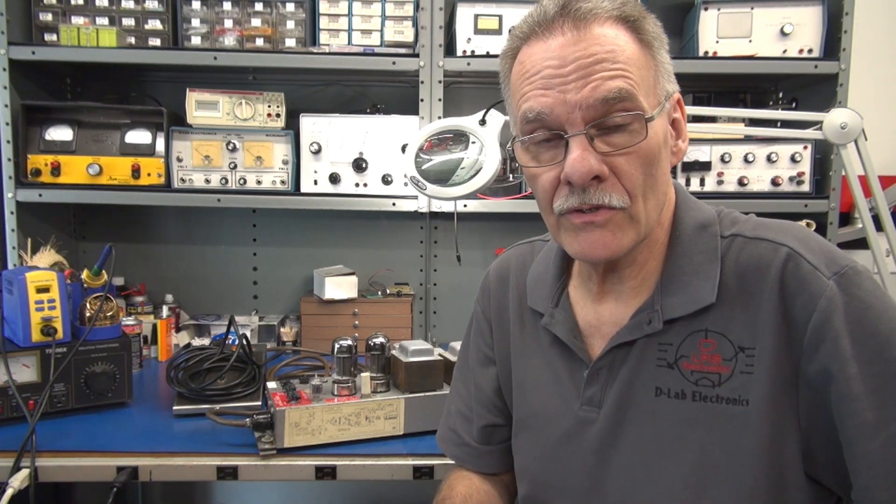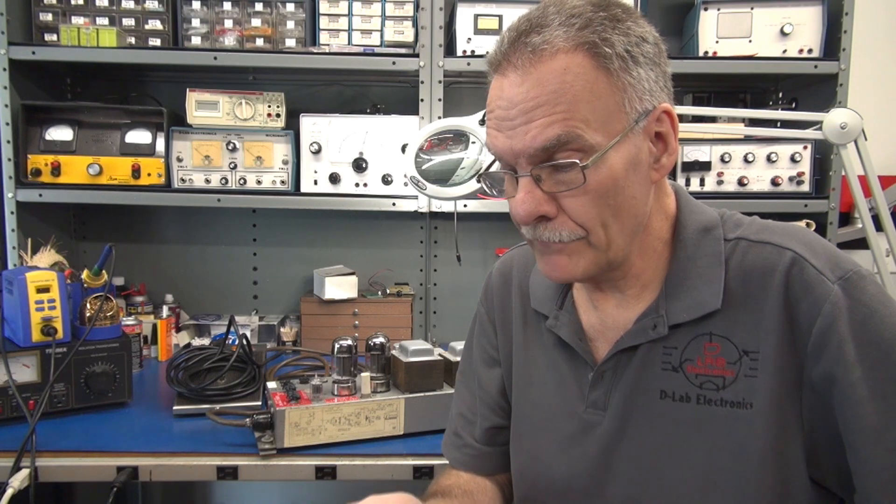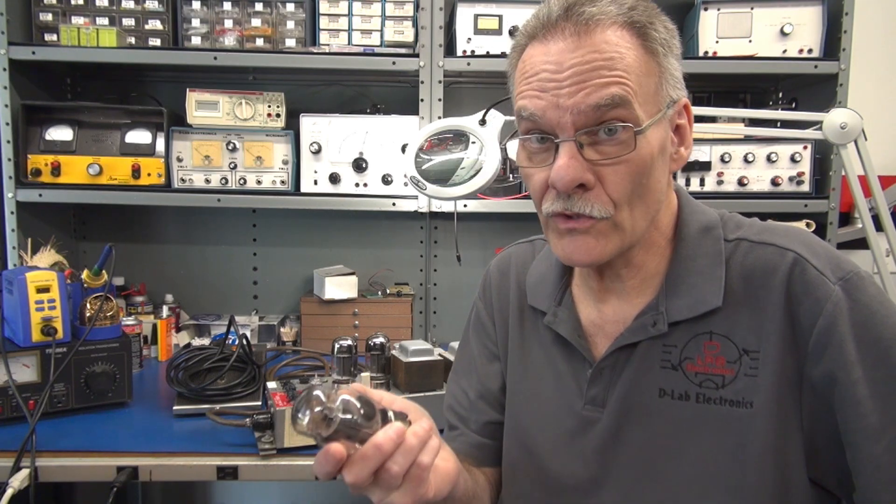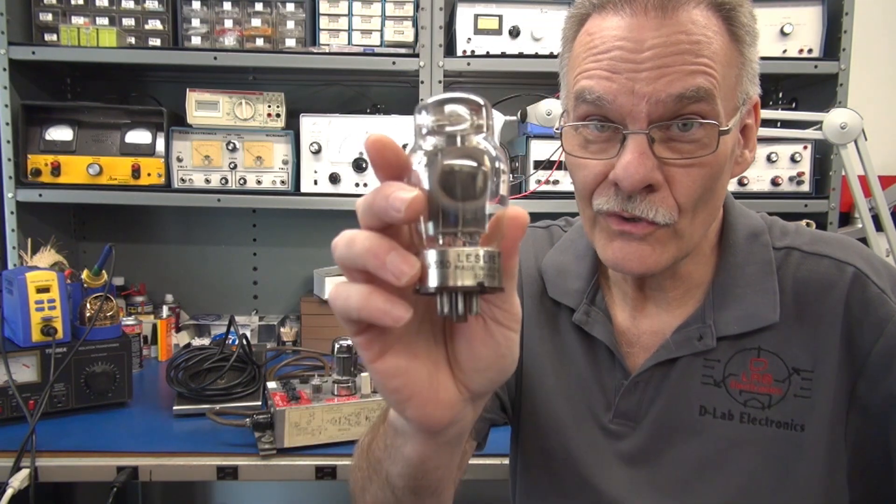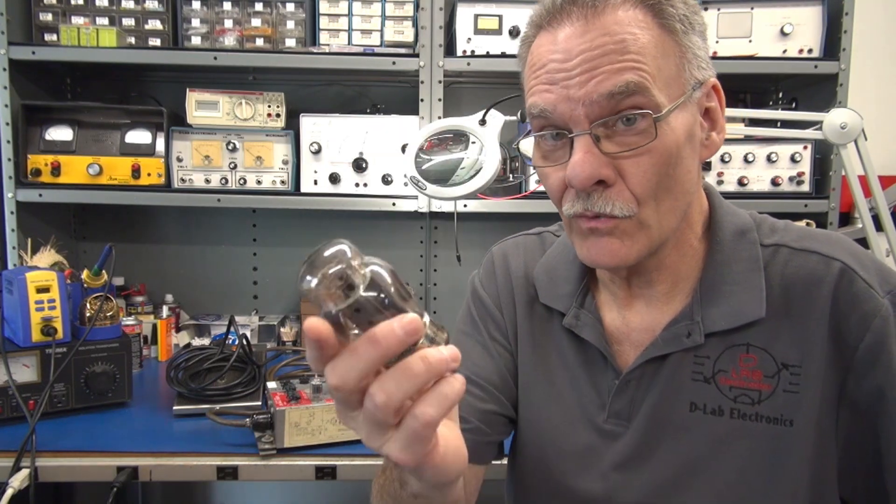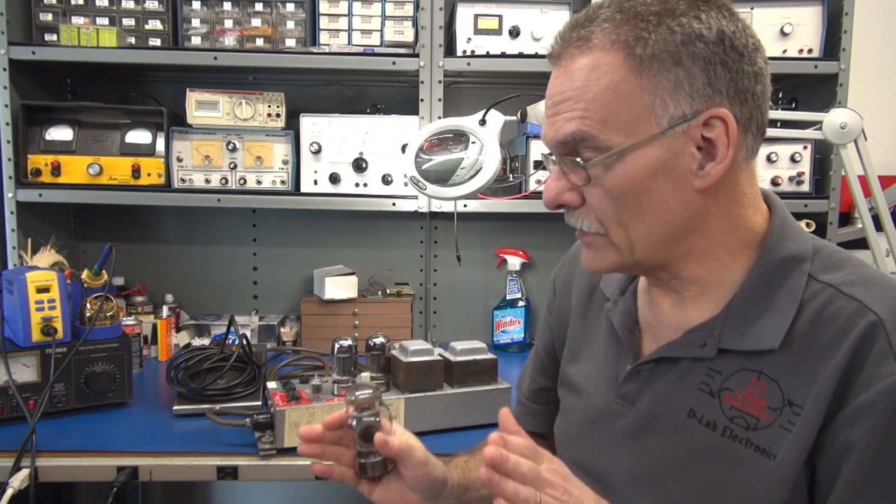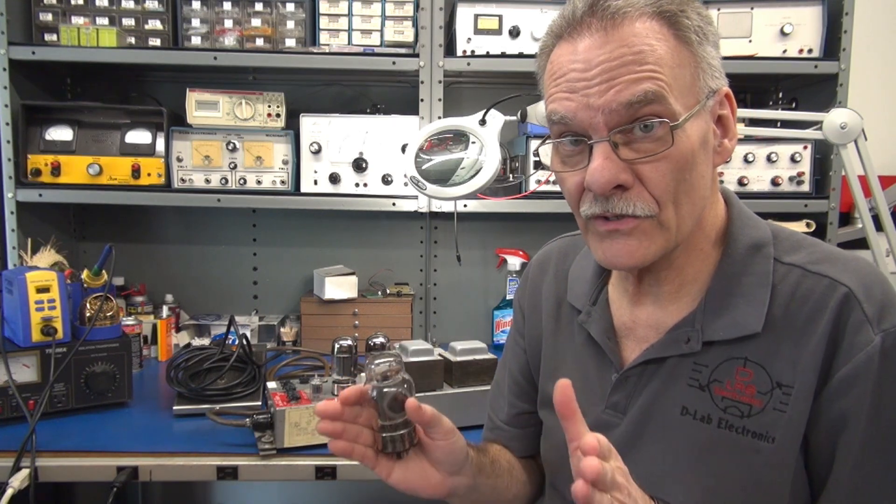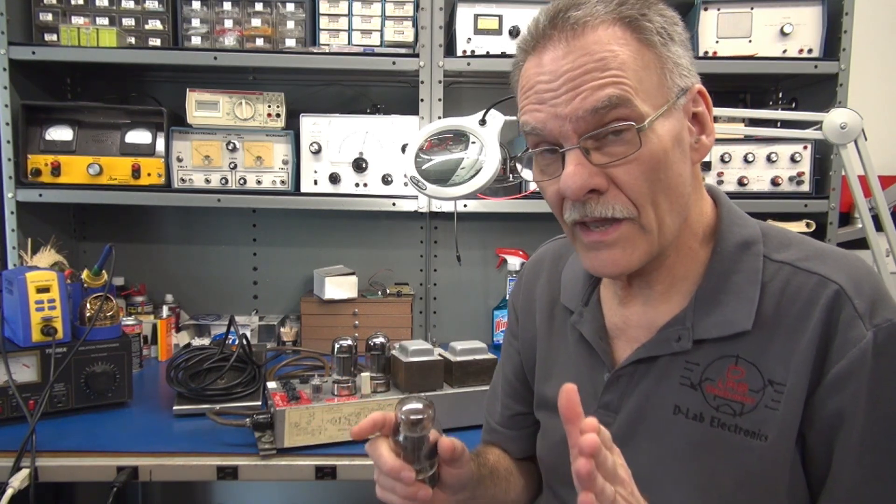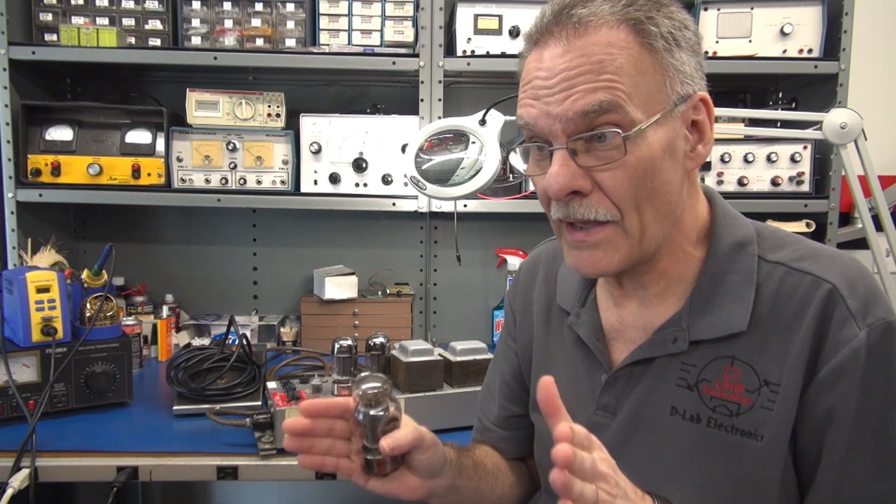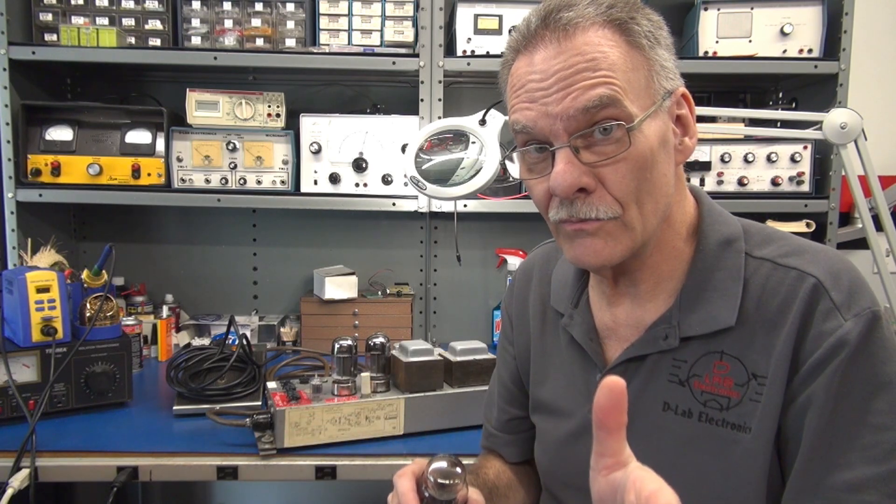The amplifier came into the shop with a distortion problem. I checked the output tubes and unfortunately one of the original Leslie 6550s was shorted. So I replaced the tubes with a pair of RCAs and then thought it's time to move on and check the bias so we don't smoke our new set of tubes.